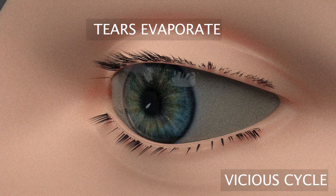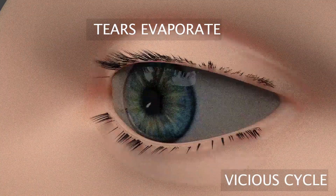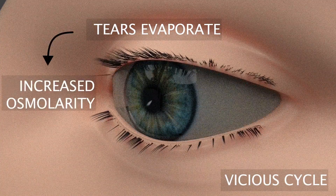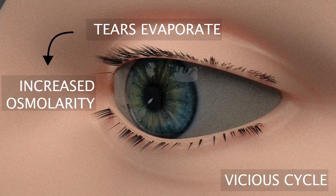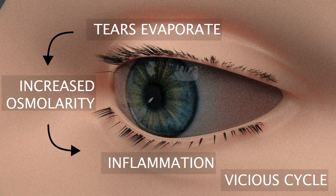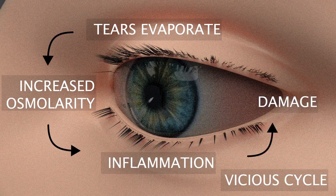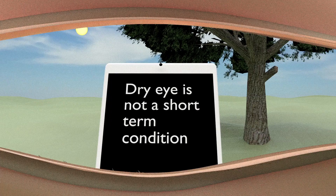Tear evaporation leads to tear loss, which increases the osmolarity or saltiness of the tear film. This causes inflammation of the ocular surface, which leads to damage that destabilises the tear film still further, leading to a vicious cycle of disease. Hence, dry eye is not a short-term condition.